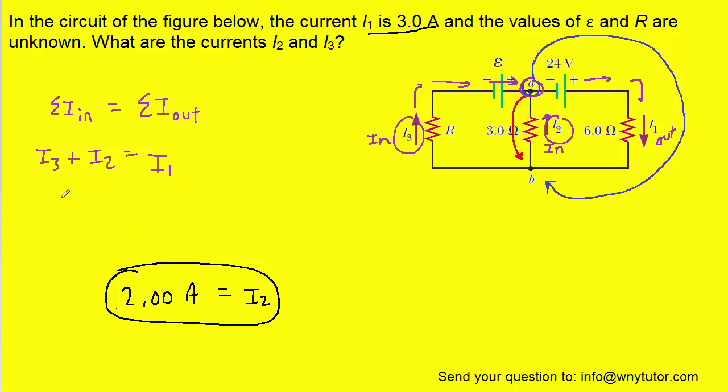Then we can solve this equation for I3 by subtracting I2. Since we know the values of both I1 and I2, we can just plug them in. So we'll plug in 3 amps for I1, 2 amps for I2, and then we can see that the current marked I3 is equal to 1 amp.